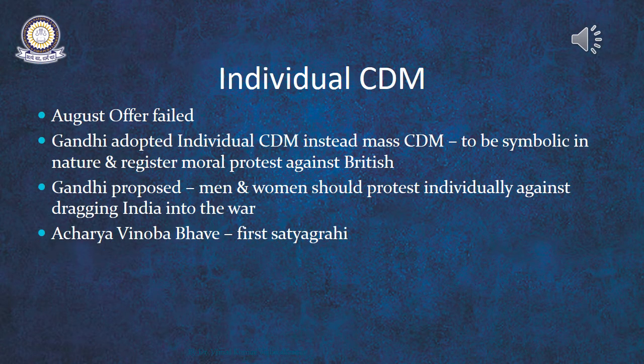The August Offer failed to fulfill the expectations of both Congress and the Muslim League. Even leaders like Gandhi, Nehru, and Rajagopalachari, who had been in favor of extending conditional cooperation to the British war effort, turned against them. Gandhi was invited by Congress to lead the movement. In view of the critical war situation, Gandhi adopted individual Satyagraha — individual civil disobedience — instead of a mass civil disobedience movement. Gandhi wanted the movement to be symbolic in nature, to register India's moral protest and draw the world's attention to Indians' right to freedom. He proposed that men and women should protest individually against dragging India into the war by disassociating themselves from the war effort publicly and courting arrest.